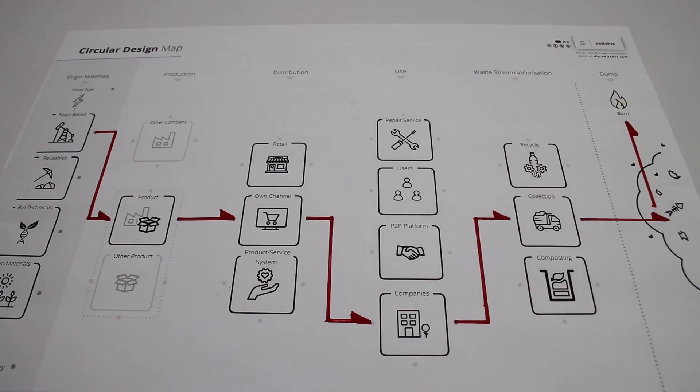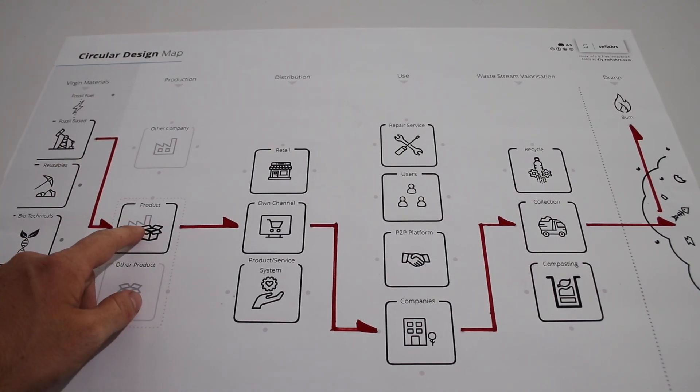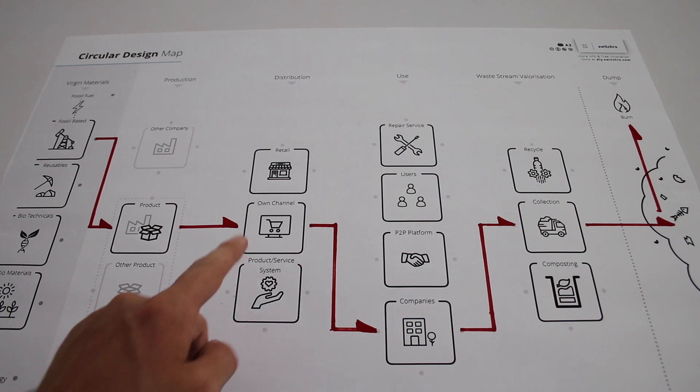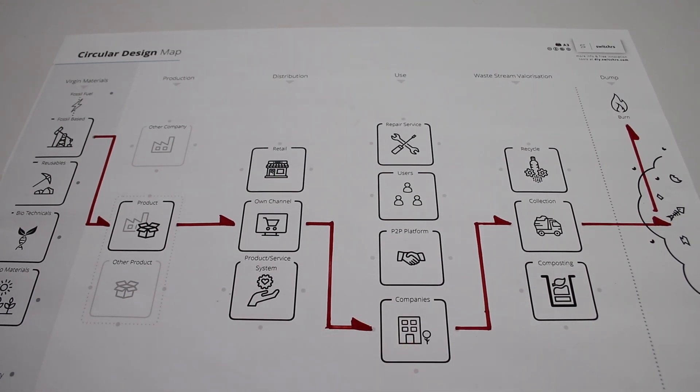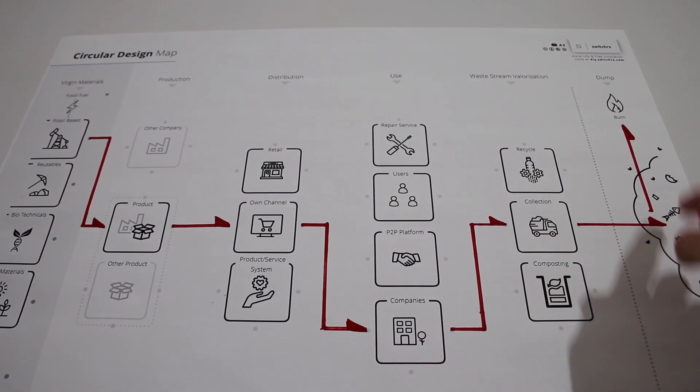Now that we've explained the different steps in the circular design map, let's take a look at how we use it with an example. Interface is a producer of carpet tiles for a B2B environment. First we map out the simplified business-as-usual scenario of Interface with a red marker. Nylon and rubber, created from fossil materials, are through production converted into carpet tiles, which are then sold to companies who want carpet tiles for their offices. At end of life, these carpets go to an incineration plant for energy recovery. Once we have a baseline, we start to explore with a green marker — are there other opportunities and alternatives, keeping in mind the nature of the product, costs, user behavior and habits?